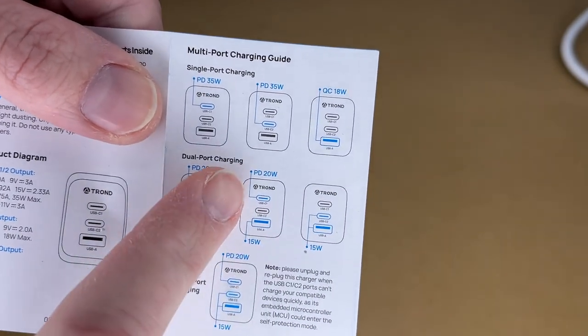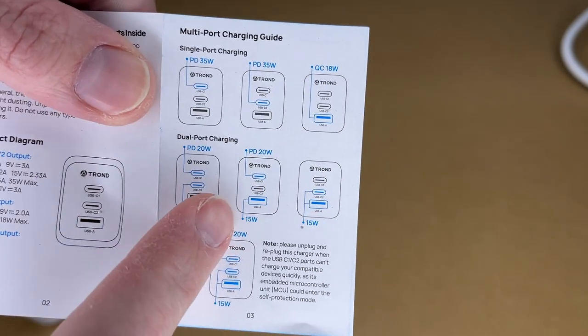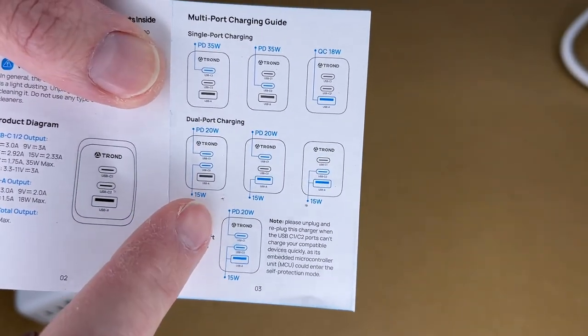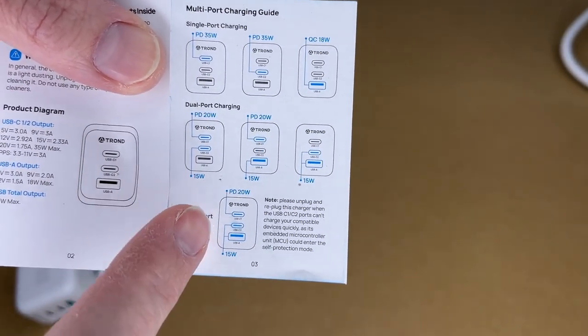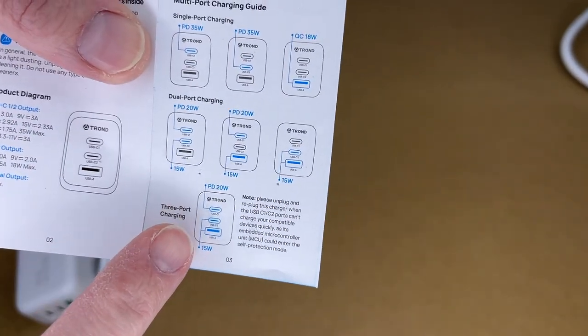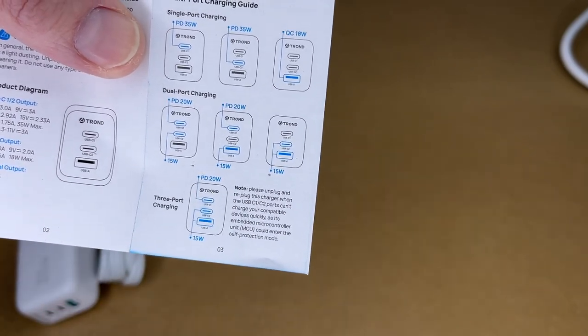For instance if you're using the USB-C and USB-A port your max PD is 20 watt on USB-C and your max on USB-A is 15 watt. If you're using all three ports you can get 20 watts out of the USB-C port one and then USB-C 2 and USB-A you can get 15 watts. If you're not getting the fastest charging and you've been swapping the ports around it says here you want to unplug it and plug it back in so it can reset.